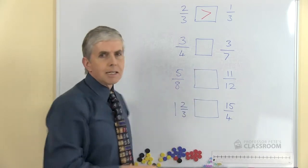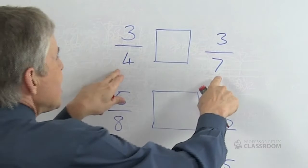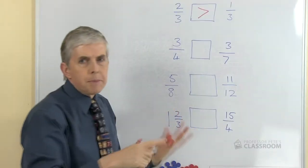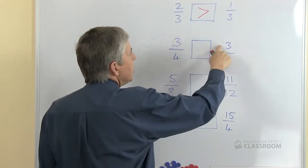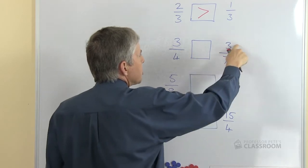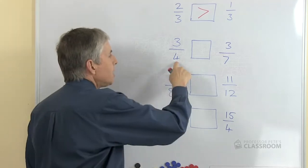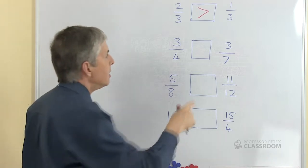In the second example the pieces are different sizes, their denominators are different. We have fourths or quarters and sevenths, and so that makes it more difficult straight away. However we have the same number of them, so this is three quarters or fourths, this is three-sevenths. So if we knew what one quarter was compared to one-seventh we would know the answer between three quarters and three-sevenths.